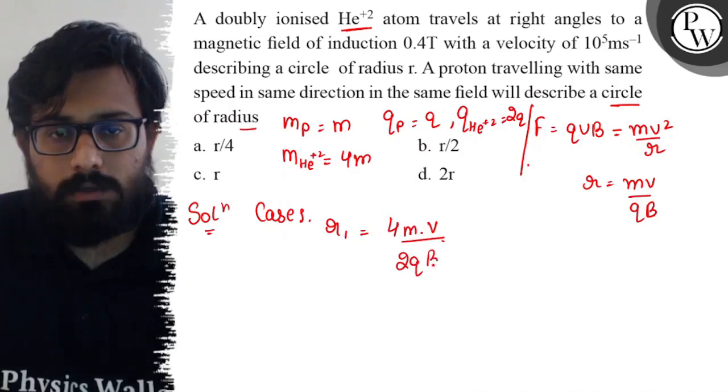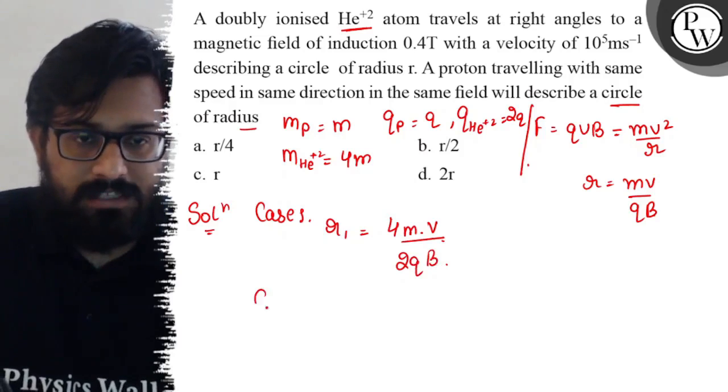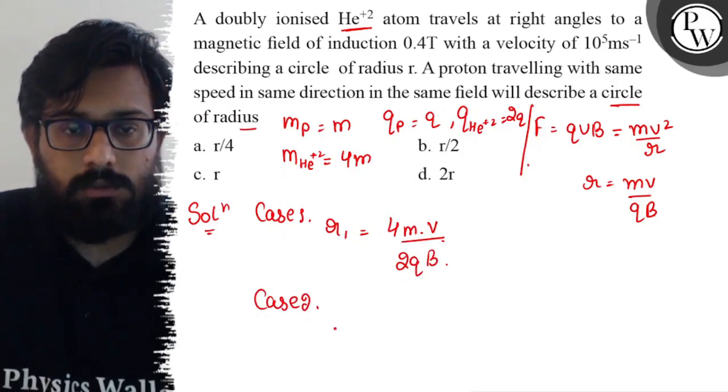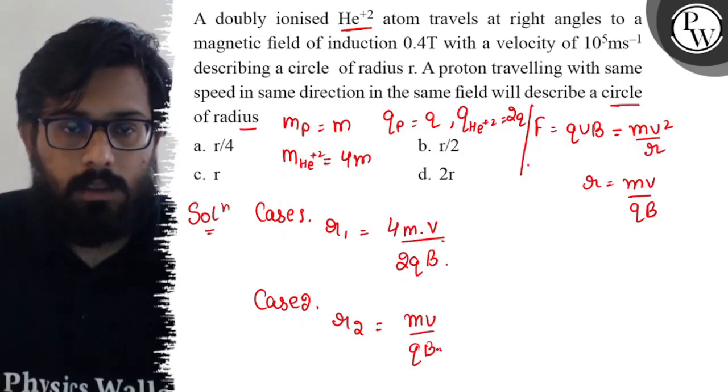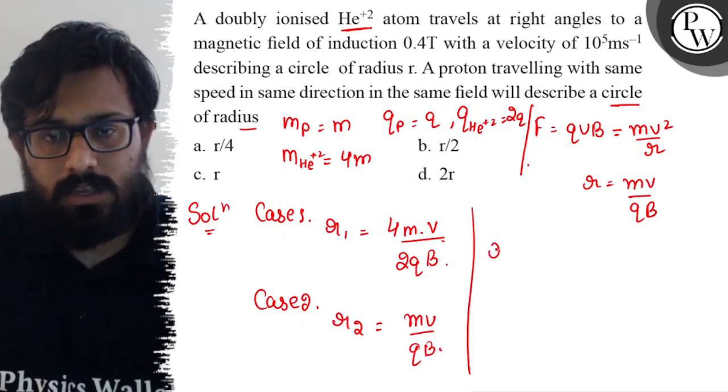Similarly, Case 2: r2 comes out to be mv/qB. So if you take the ratio, r1 by r2 can be simply written as...